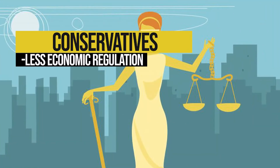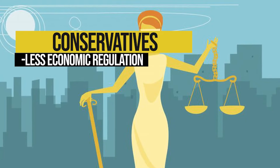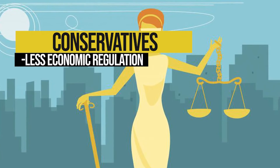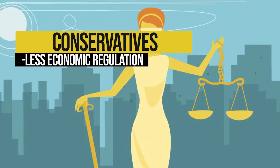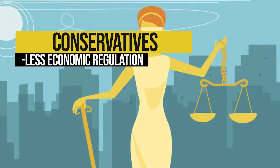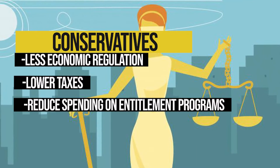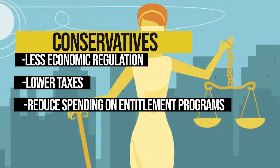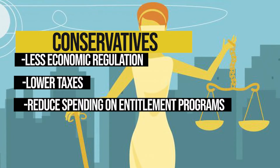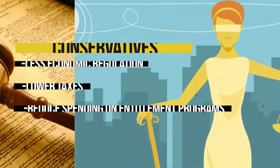Conservatives typically favor less economic regulation, allowing people to trade as they wish. Trump-style conservative nationalists are more mixed on their support for free trade and opposition to regulations though. When it comes to tax and spending, conservatives are unified supporting tax cuts and favor cutting spending on things like entitlement programs, especially entitlement programs that provide assistance based on income.